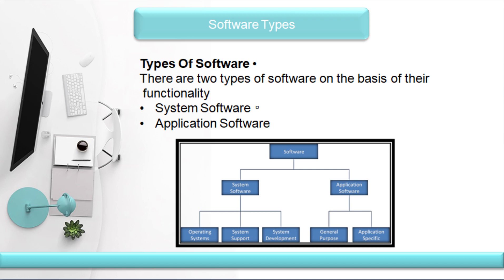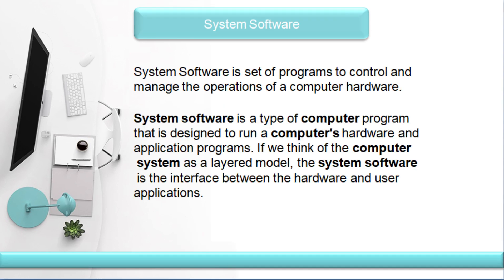First, we need to run the system. We need to run the system and display options. We need to run the software and get instructions for the hardware. The user will click on a button, and the start button will interact with the hardware. The hardware will respond and the screen will display.